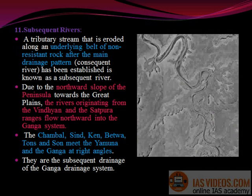Subsequent rivers: A tributary stream that is eroded along an underlying belt of non-resistant rock after the main drainage pattern — the consequent river — has been established is known as a subsequent river. Due to the northward slope of the peninsula towards the Great Plains, the rivers originating from the Vindhyan and the Satpura ranges flow northward into the Ganga system. The Chambal, Sind, Ken, Betwa, Tons, and Son meet the Yamuna and the Ganga at right angles. They are the subsequent drainage of the Ganga drainage system.